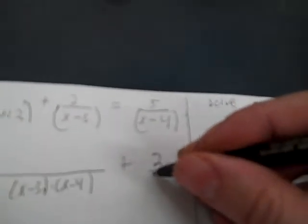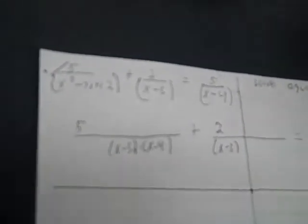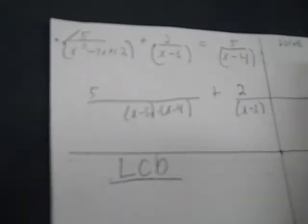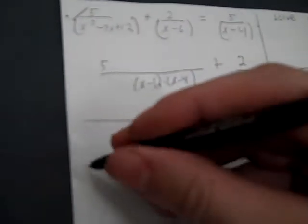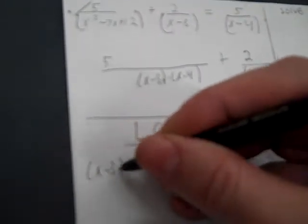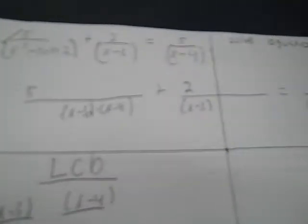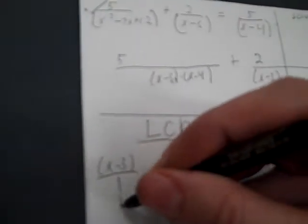x minus 3 has two terms but it's a prime expression. And we have x minus 4. So now I need to come up with my LCD, lowest common denominator. We have x minus 3, we have x minus 4, and there's really no outer factors. So x minus 3: I've got 1, 1, 0. So the one with 0, we need to put an x minus 3 there.